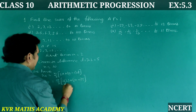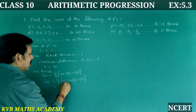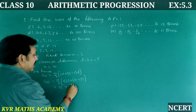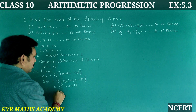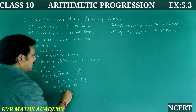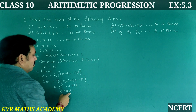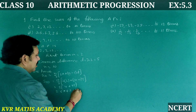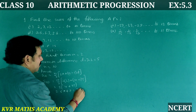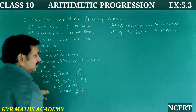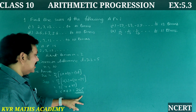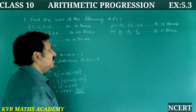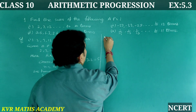S₁₀ = 10/2 × [2×2 + (10−1)×5] = 5 × [4 + 45] = 5 × 49 = 245. So the sum of the first 10 terms is 245.